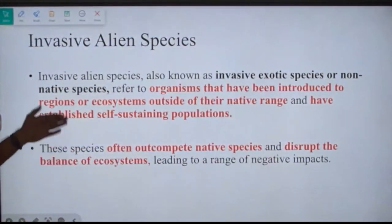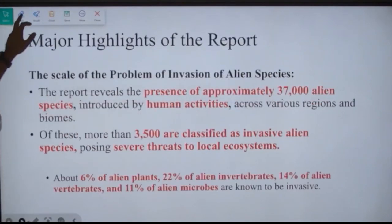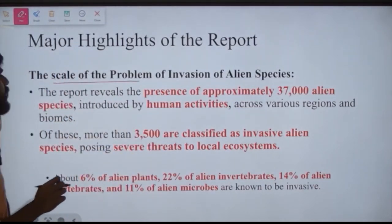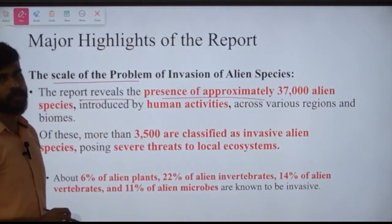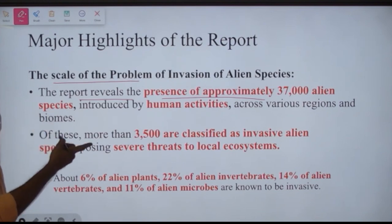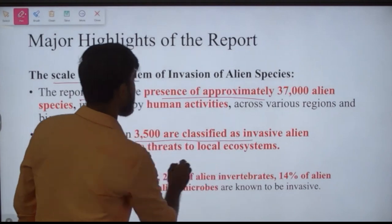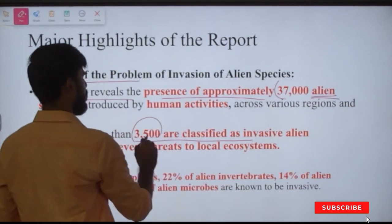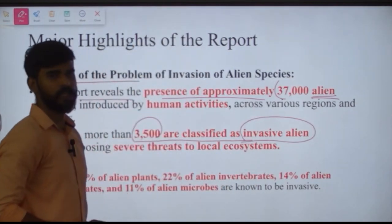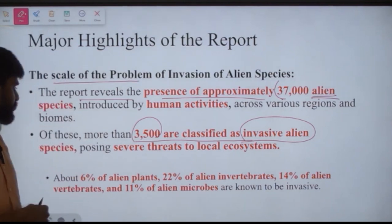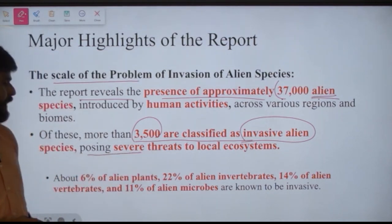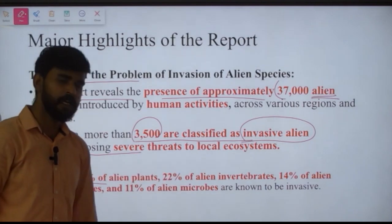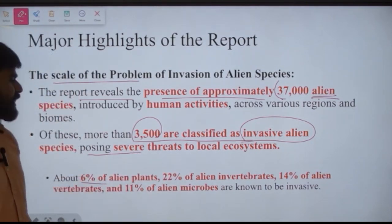Regarding the scale of the problem: the report reveals the presence of approximately 37,000 alien species introduced by human activities. Of these, 3,500 are classified as invasive alien species, posing severe threats to local ecosystems. Of the 3,500 invasive species: 6% are plants, 22% are invertebrates, 14% are vertebrates, and 11% are alien microbes.